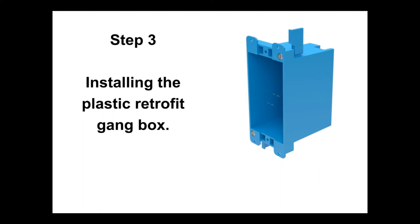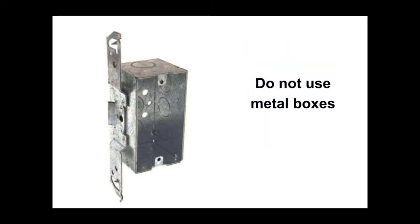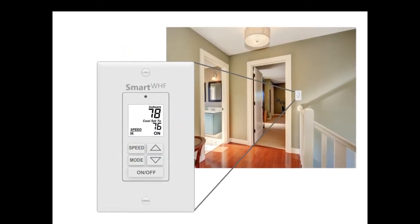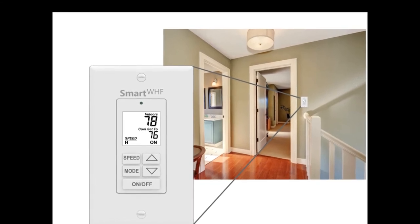Step 3 is installing the plastic retrofit gain box. Do not install the WTT in a metal gain box, as this could interfere with the optional wireless or Wi-Fi controls that can be added to the WTT. Select a location that will best sense the temperature, making sure to avoid areas that may influence the temperature, such as an outside wall or direct sunlight.